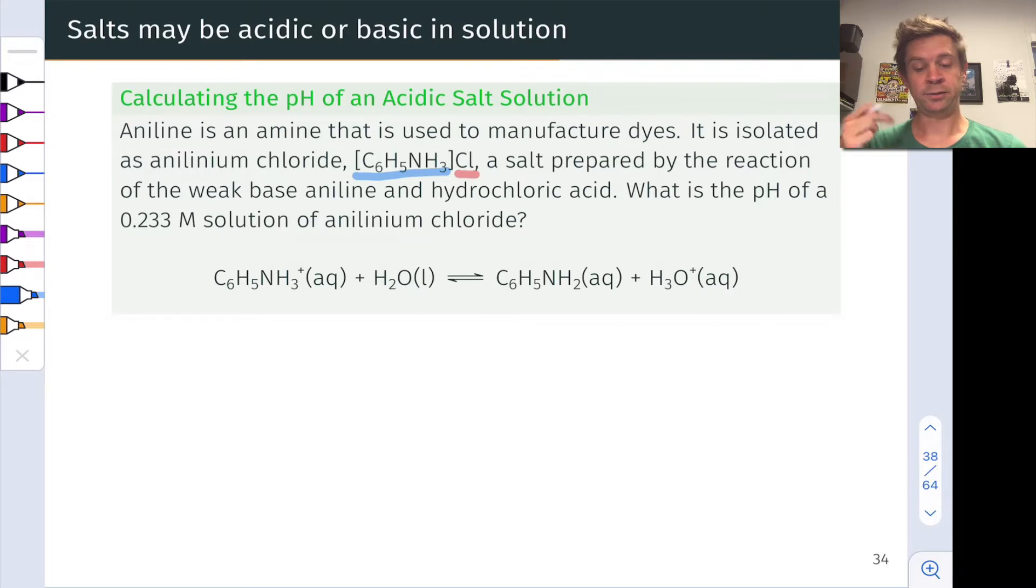Now anilin is a weak base, hydrochloric acid a strong acid, and so proton transfer from HCl to anilin is going to be heavily favored, and the Cl- anion is going to be pretty much inert. And so the active ion here, the ion that is doing the business, is the anilinium cation.